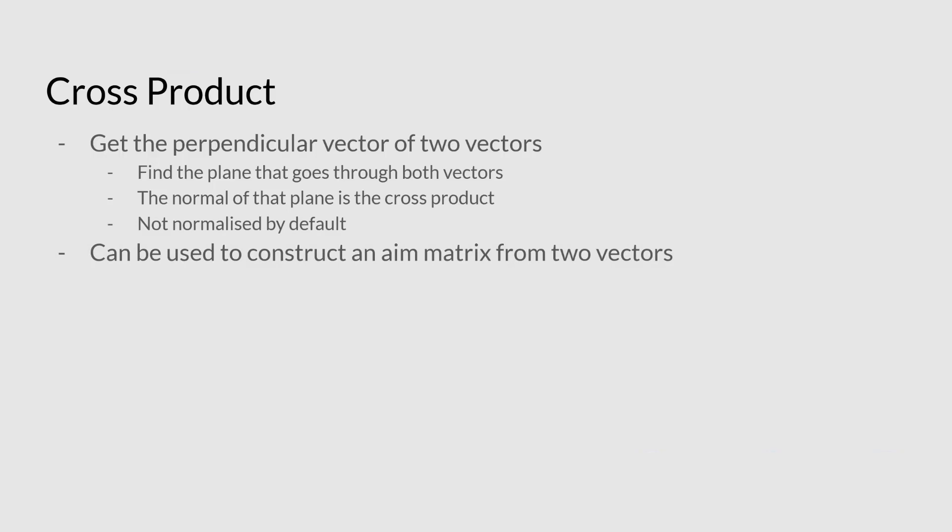The interesting thing about this is that it can actually be used to create an aim matrix. Like, you have an aim node in Maya, right? You need a target and an up target. That's basically two vectors. So as long as you have that, you can create an aim matrix from that. And it's not something that we'll go into just now with the vectors, but hopefully when we come to the matrix math, this will make a bit more sense.